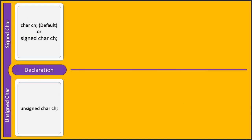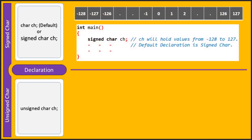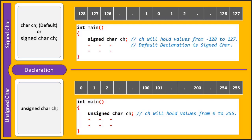Next we will discuss declaration. We can declare a variable as either signed or unsigned. Since both take 1 byte of memory, the user should not think about size when declaring. The key parameter to consider is the range of values. If values from -128 to 127 are needed, declare the character type as signed; if values from 0 to 255 are needed, declare it as unsigned.